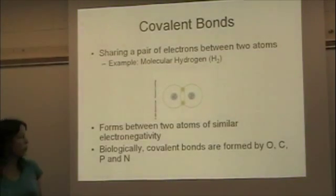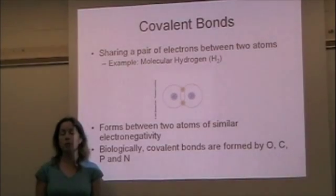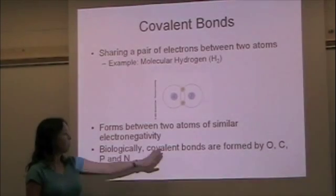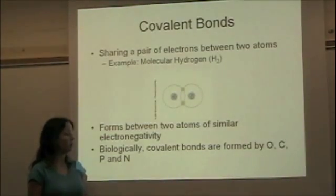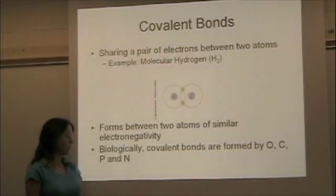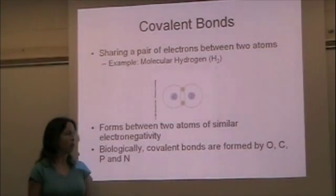Covalent bonds are really important in biology. All of the organic compounds that we're going to learn about are held together with covalent bonds, mostly. Some really important atoms that form covalent bonds are oxygen, carbon, phosphorus, and nitrogen. We'll see examples of that in upcoming presentations.